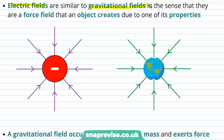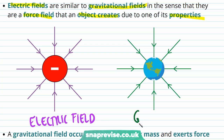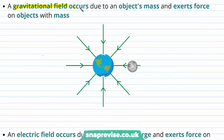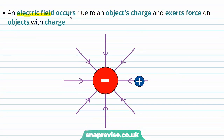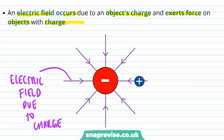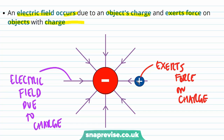Electric fields are similar to gravitational fields in the sense that they are a force field that an object creates due to one of its properties. So here's an electric field created by a negative charge, and this is similar to a gravitational field being created by a mass. A gravitational field occurs due to an object's mass and exerts force on objects with mass. An electric field occurs due to an object's charge and exerts a force on objects with charge. Because these two charges are oppositely charged, this force is attractive.